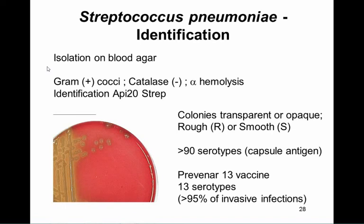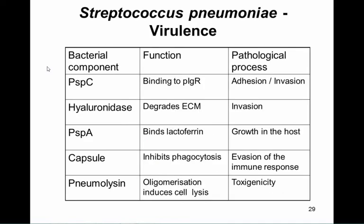The presence of the capsule antigen is essential for pathogenicity. There are more than 90 capsule serotypes in circulation in Europe and the United States, making a comprehensive vaccine difficult. The vaccine Prevnar 13 contains 13 different capsule antigen serotypes, covering most strains responsible for invasive infections. It is effective against pneumococcal meningitis, pneumonia, and also reduces the incidence of otitis.